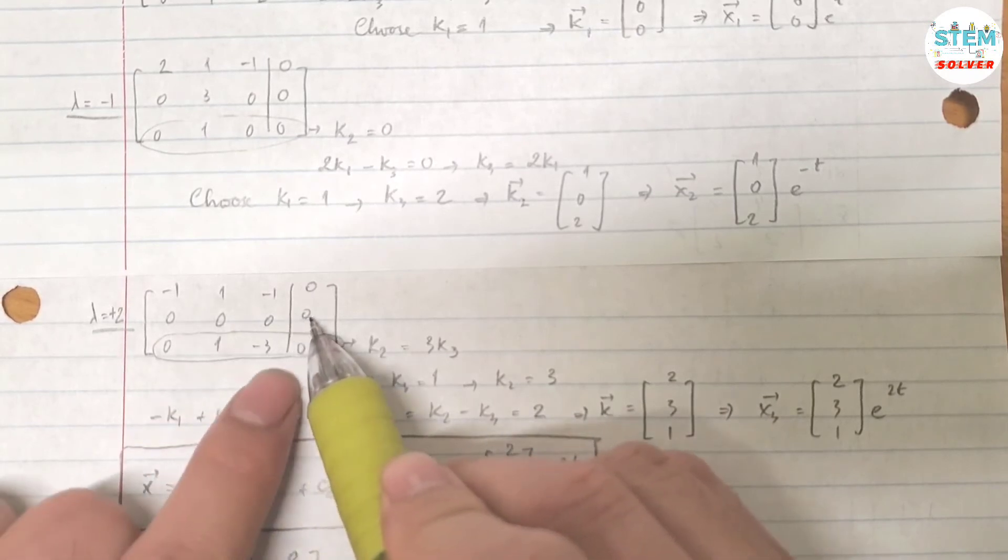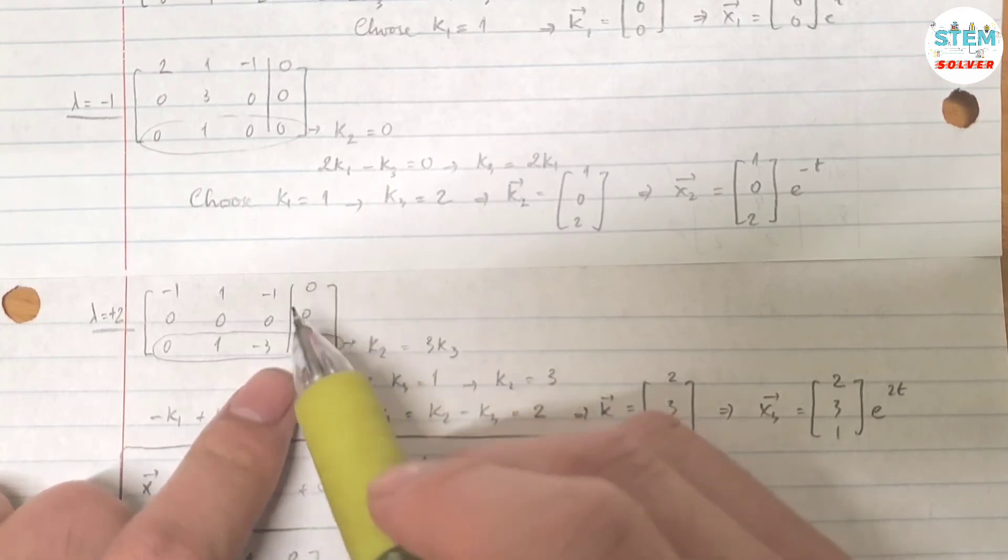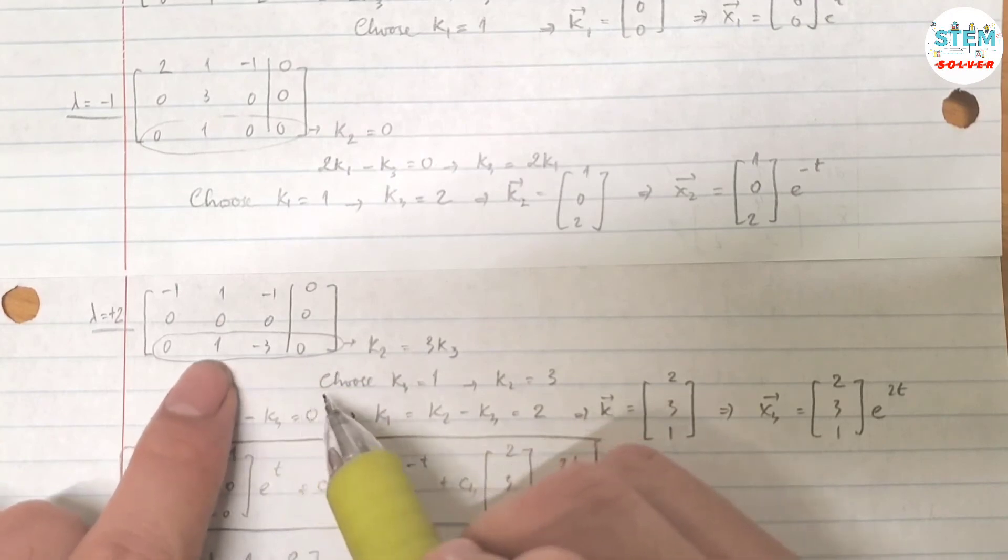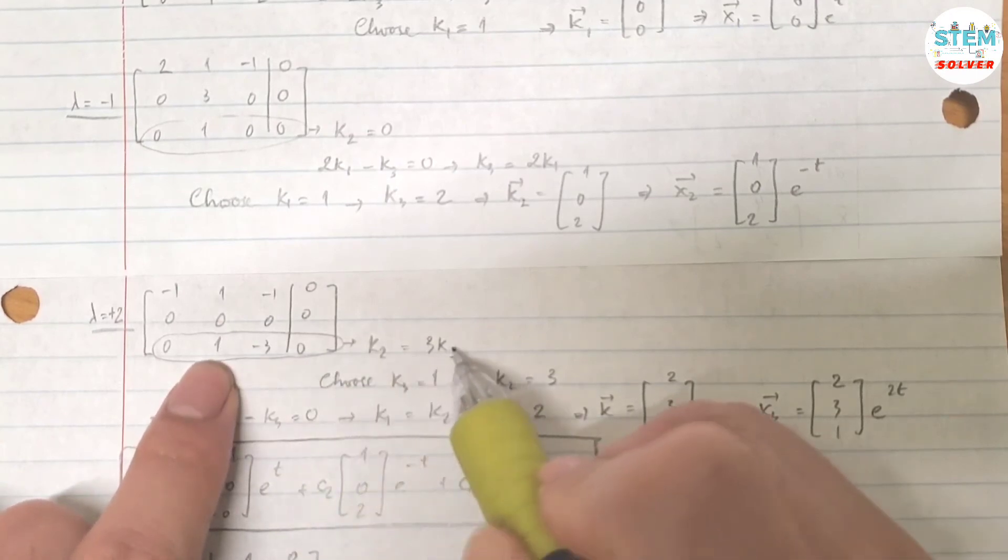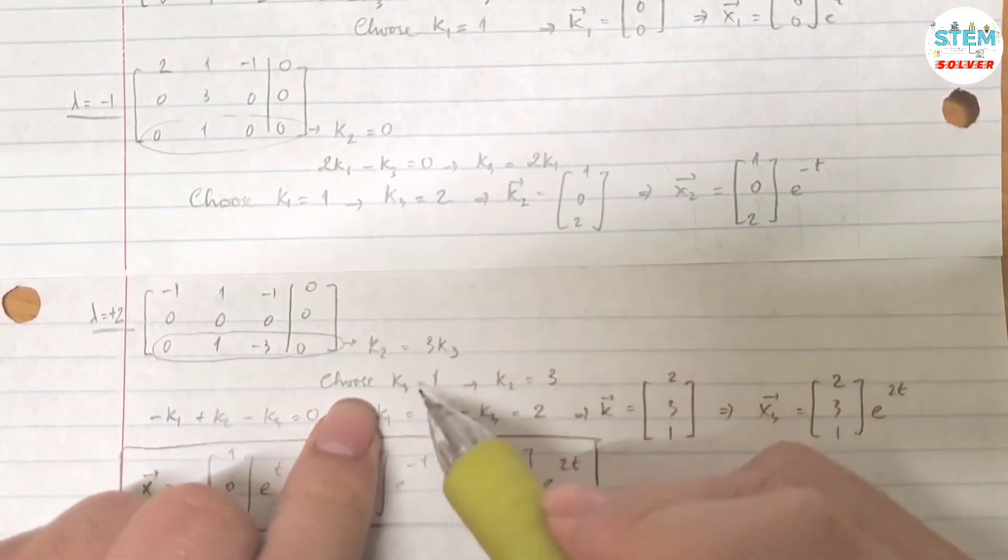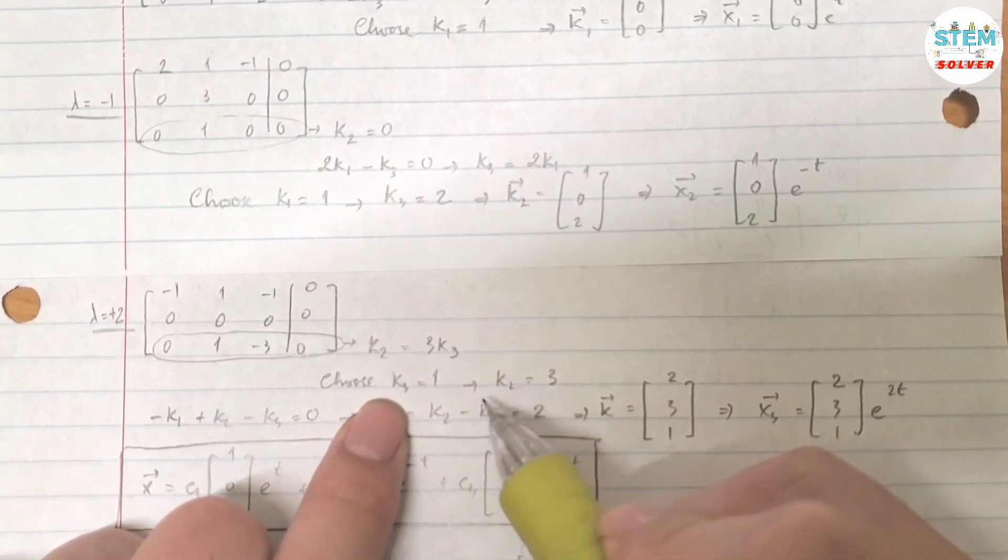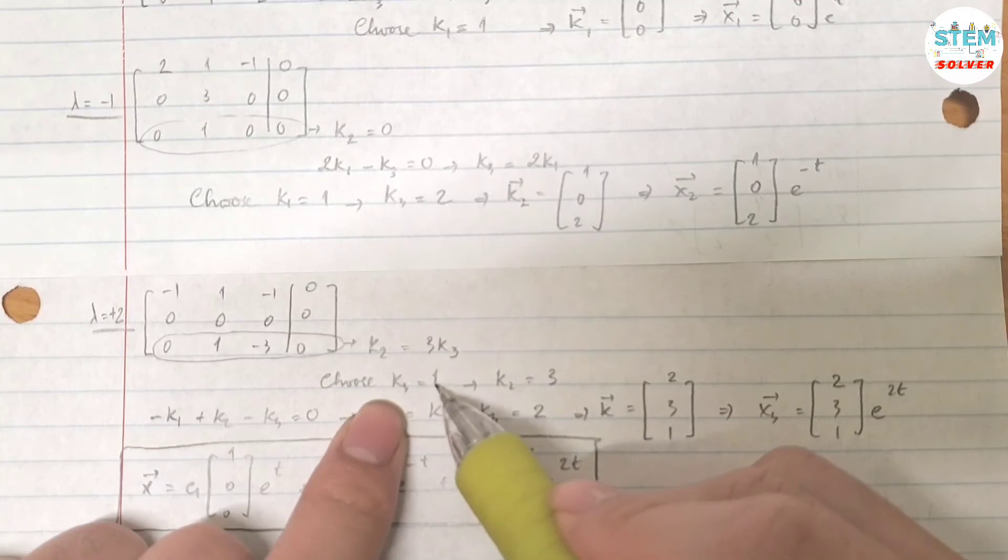For this row, k3 is everything. So I'm going to use this one. I have k2 equals 3k3, and if I choose k3 equals 1, that gives me 3 for k2. You can choose whatever value for k3 as long as it's not 0.